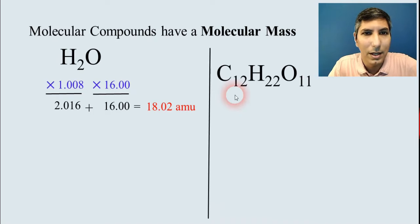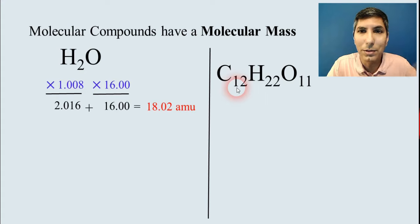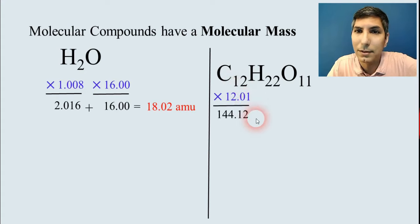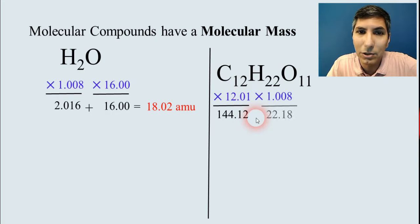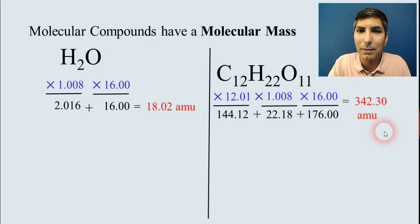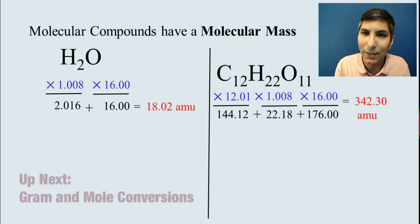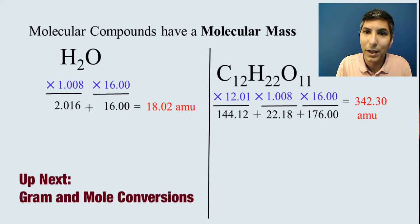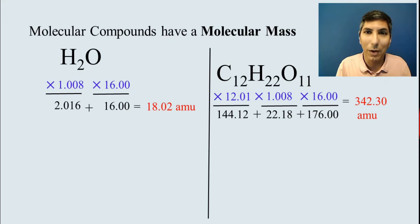And we could do that for other molecular compounds. Here's sucrose, a normal table sugar. We have 12 carbons at 12.01, and that gets us a little over 144. We have 22 hydrogens, and we have 11 oxygens. And when you add these together, we get that the molecular mass of sucrose is about 342.30 atomic mass units. And, of course, the molar mass of that, the mass of one mole of this stuff, would be 342.30 grams.